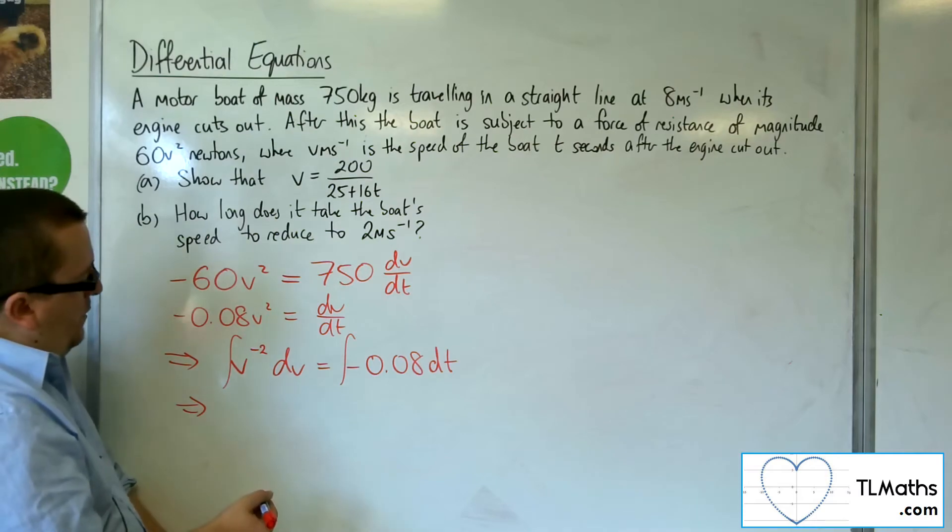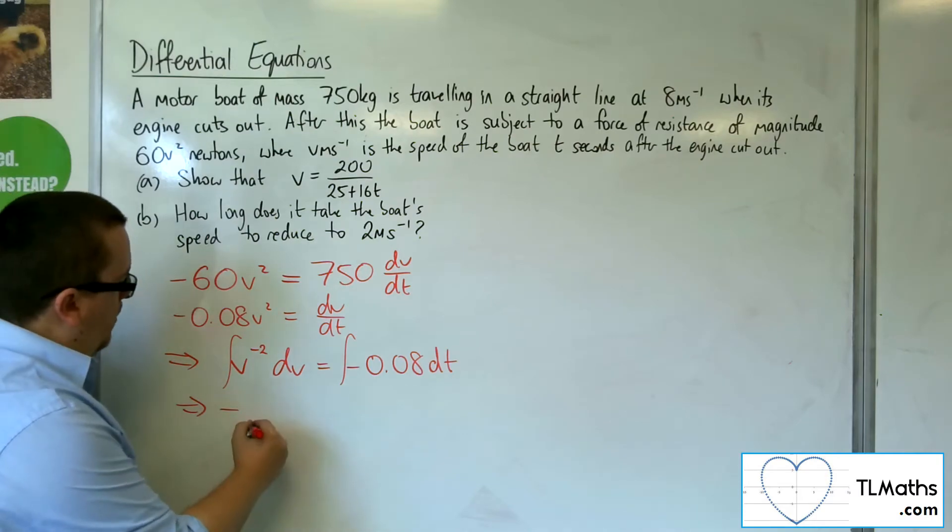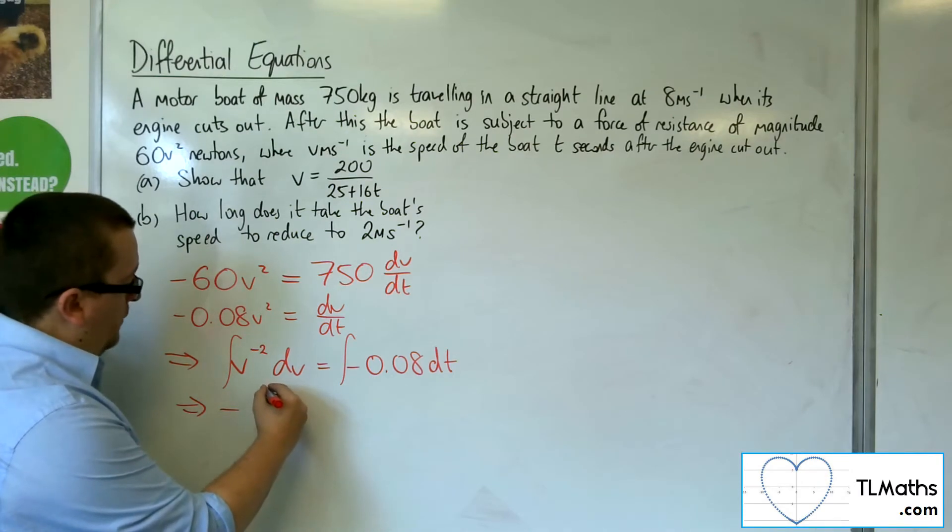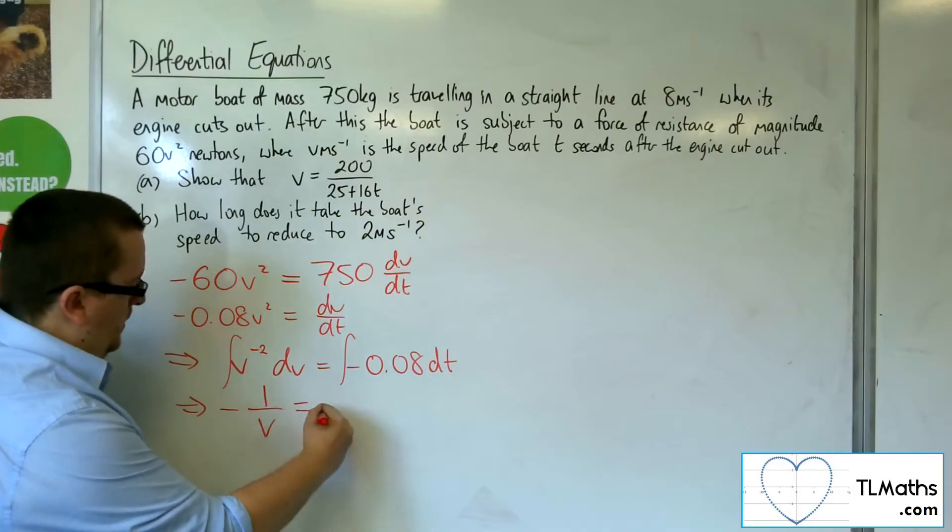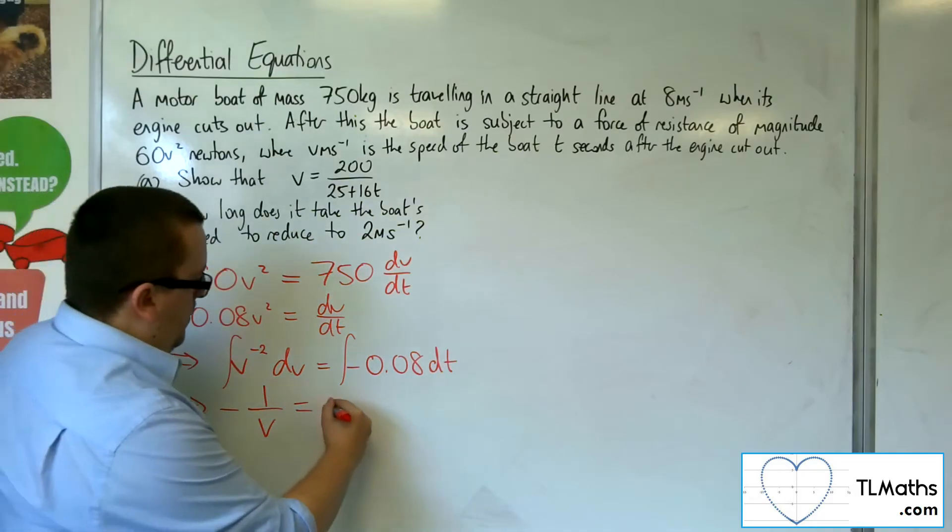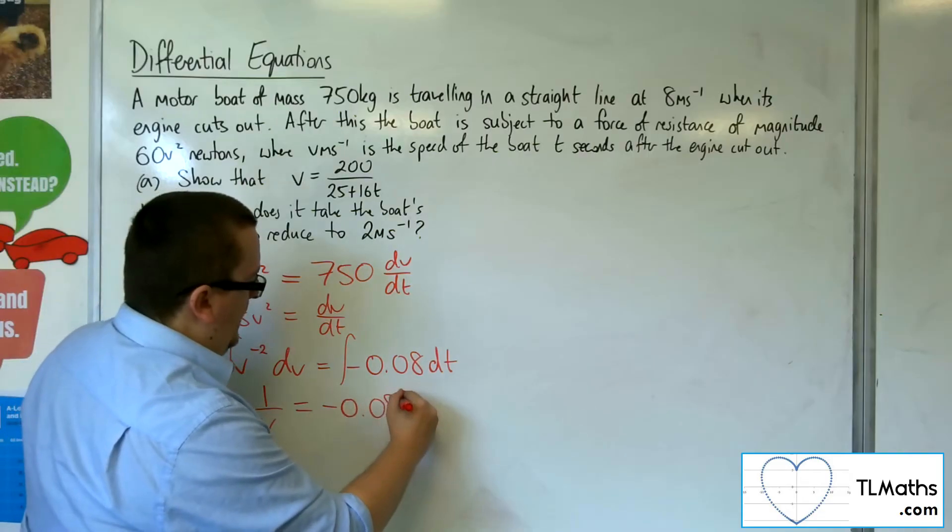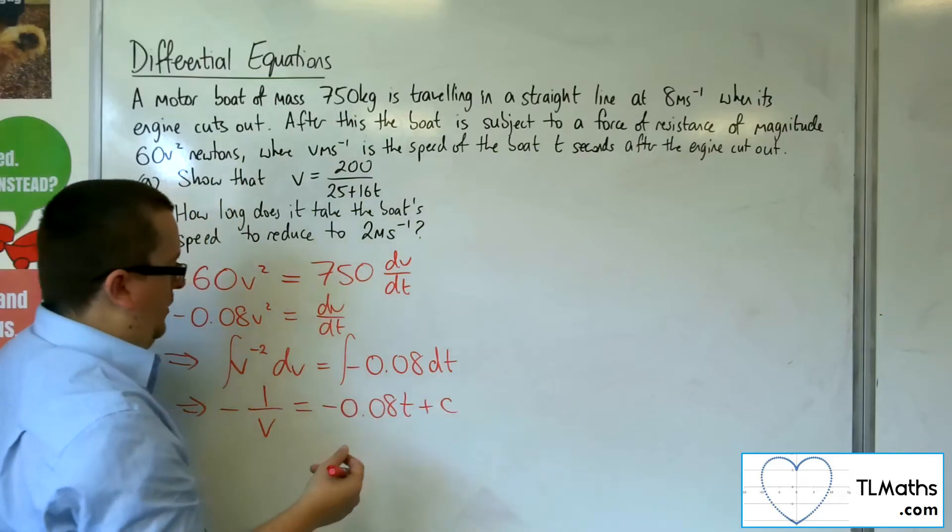So adding 1 to the power and dividing by the new power, we're going to get minus 1 over V, so V to the minus 1, is equal to minus 0.08T plus some constant C.